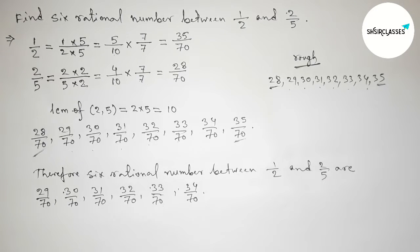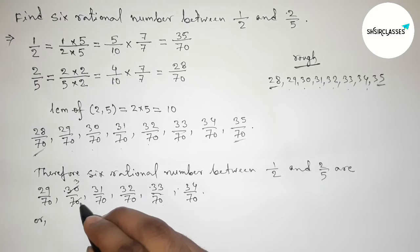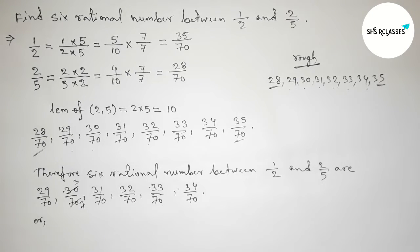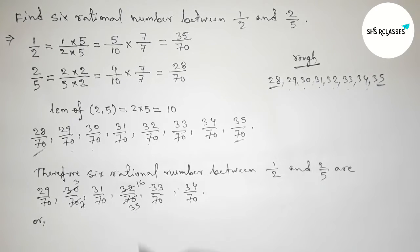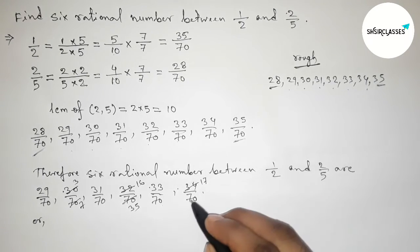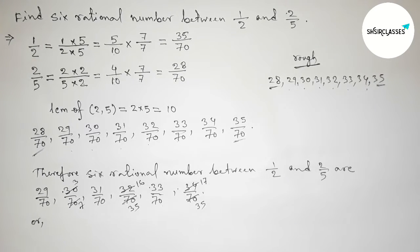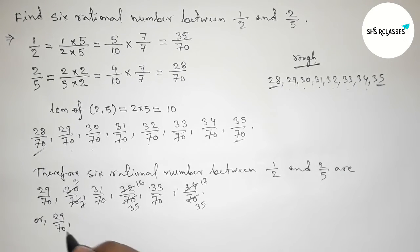We can also write these in simplified form. If we divide both numbers by 10, we get 3/7. Dividing both numbers by 2, we get 16/35. Dividing both numbers by 2, we get 17/35.